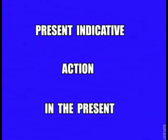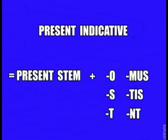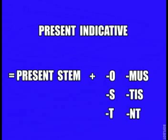The present indicative is used to indicate an action which occurs in the present. The present indicative is formed by adding the endings: ost, was, tis, nt.